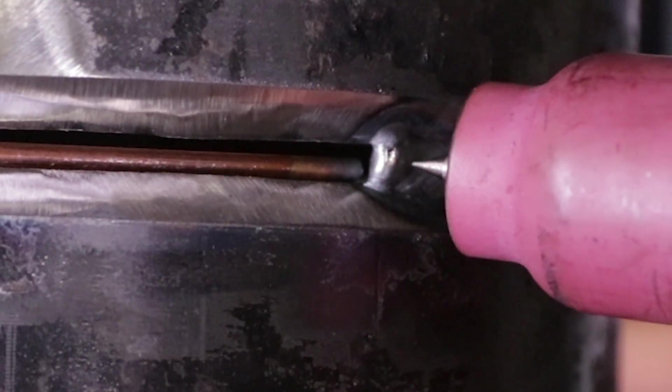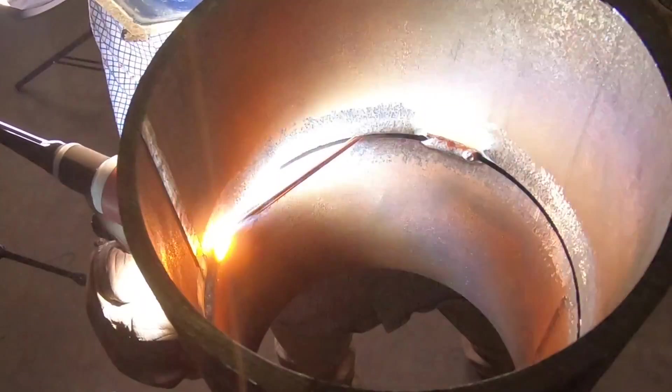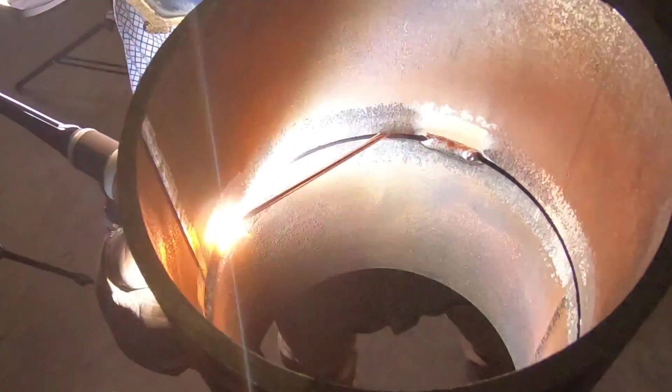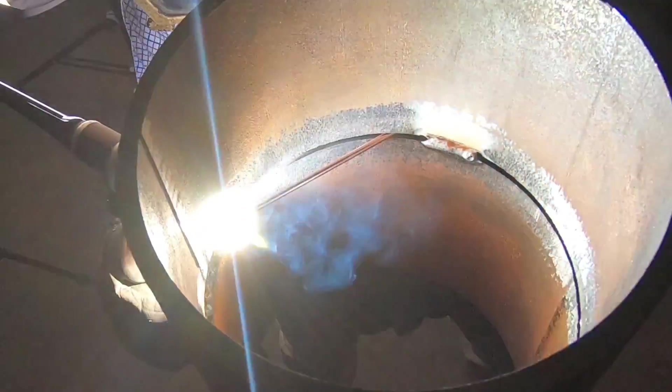One way you can look at it also is from the tip of the rod to the puddle. Sometimes if you have the rod just far enough, you can see liquified metal stretch and it'll form a bridge.